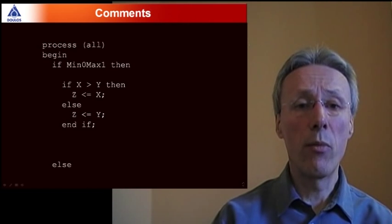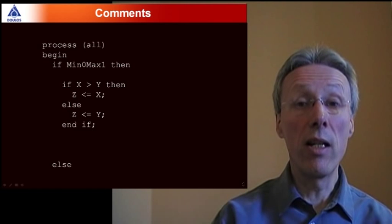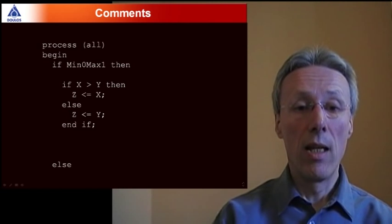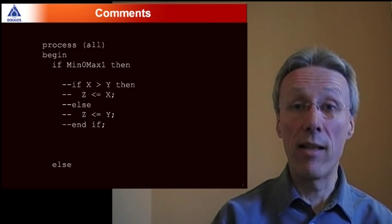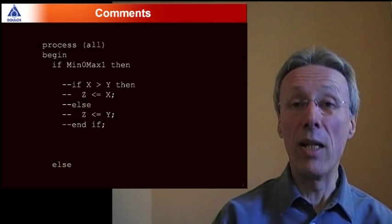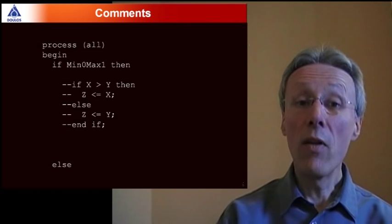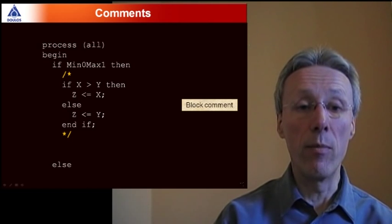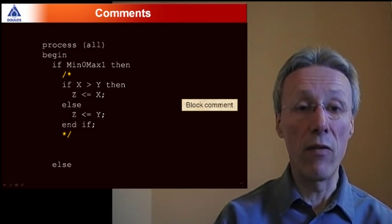So here you can see the new style process, process all, if min 0 max 1 then, and then we dive into some other code. Now what I want to do is to show you an alternative way of writing the if statement shown here. So what we would do in VHDL maybe is to comment it out. And you know that if you want to comment out a chunk of code in VHDL, well VHDL traditionally only has single line comments, so you've either got to get typing dash dash in front of all the lines you want to comment out, or maybe use a clever text editor. So VHDL 2008 now supports block comments, and the syntax of block comments has been borrowed directly from C and C++, so you can see illustrated here a block comment commenting out these five lines of code.